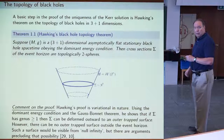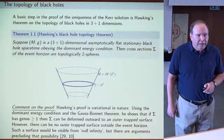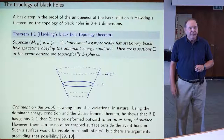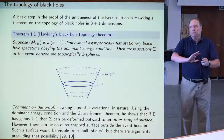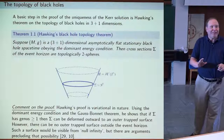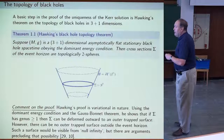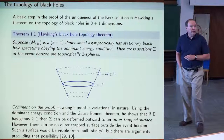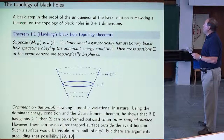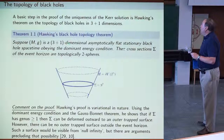A basic step in the proof of the uniqueness — after a brief aside — is Hawking's theorem on the topology of black holes in 3 plus 1 dimensions. Here's the statement: suppose M is a 3 plus 1 dimensional, asymptotically flat, asymptotically Minkowskian, stationary, steady-state black hole spacetime obeying the dominant energy condition. Then cross-sections of the event horizon are topologically two-spheres.